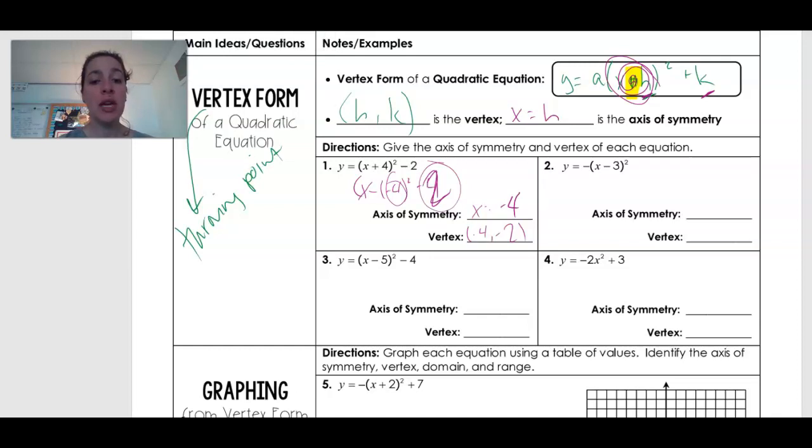So similar thing here. So I have x minus h, which is cool because then my h value is just that. So my axis of symmetry would be x equals 3. My vertex is that value, and then my k value. And since I don't have one here, it's just going to be a 0. Not a 6, 0.